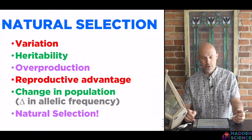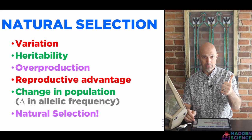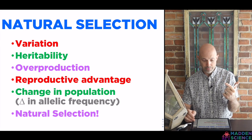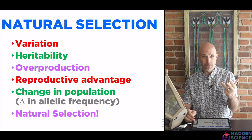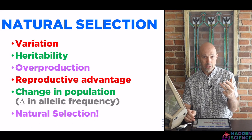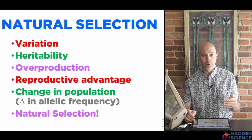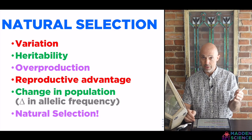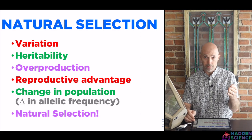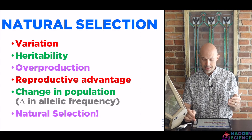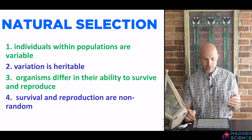Evolution acts on individuals and their inherited variations, but it's populations that evolve, not individuals. To summarize: you've got variation, some of that's heritable; you have overproduction; some of those organisms have a reproductive advantage; that leads to a change in the population or a change in allelic frequency. And that is natural selection.